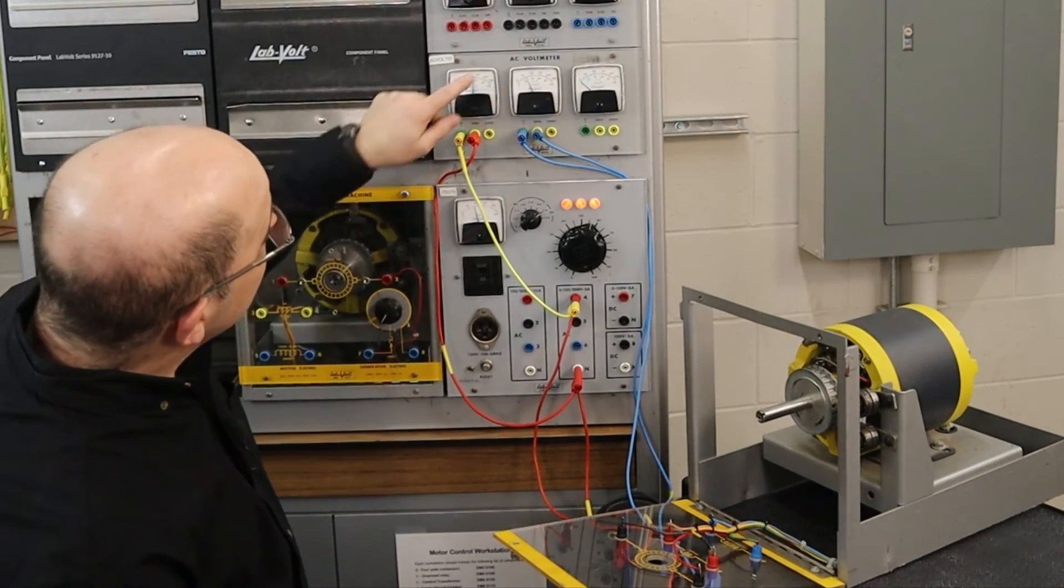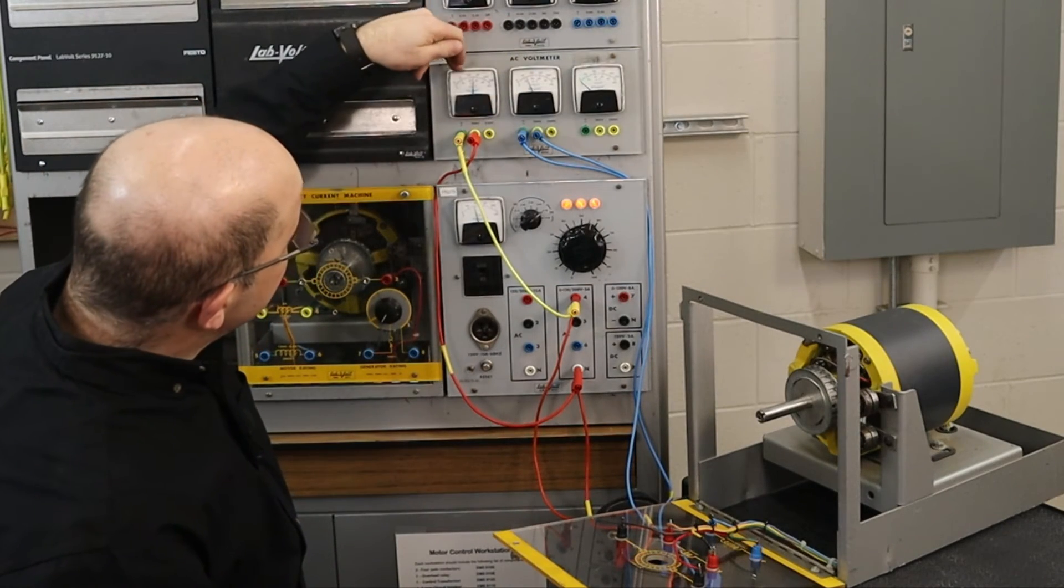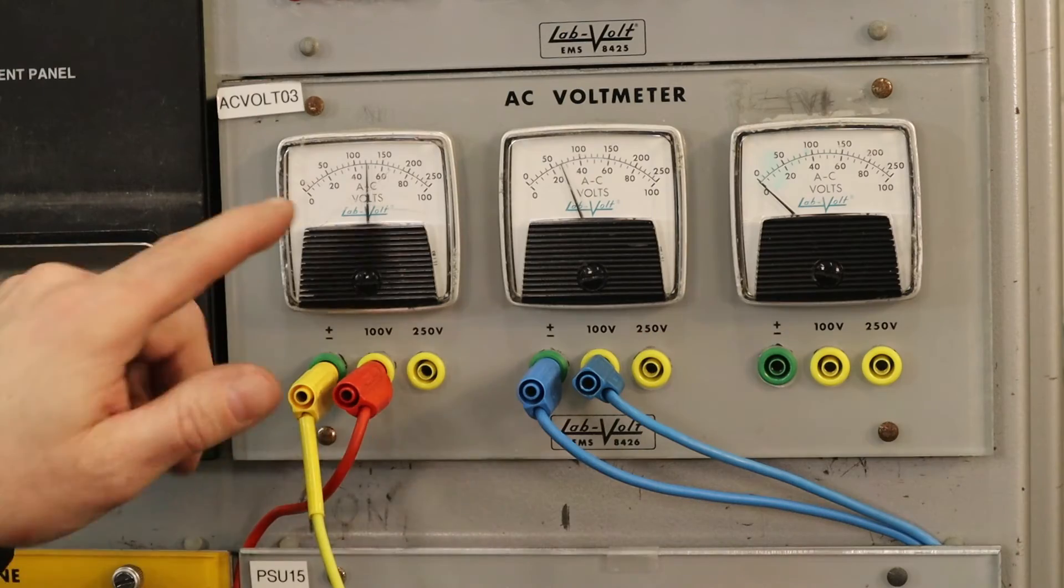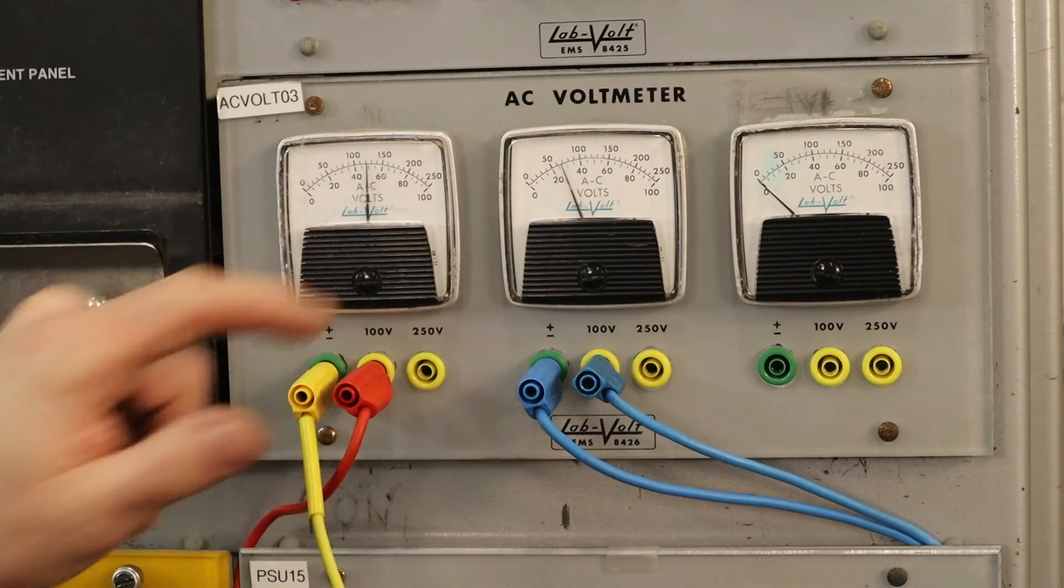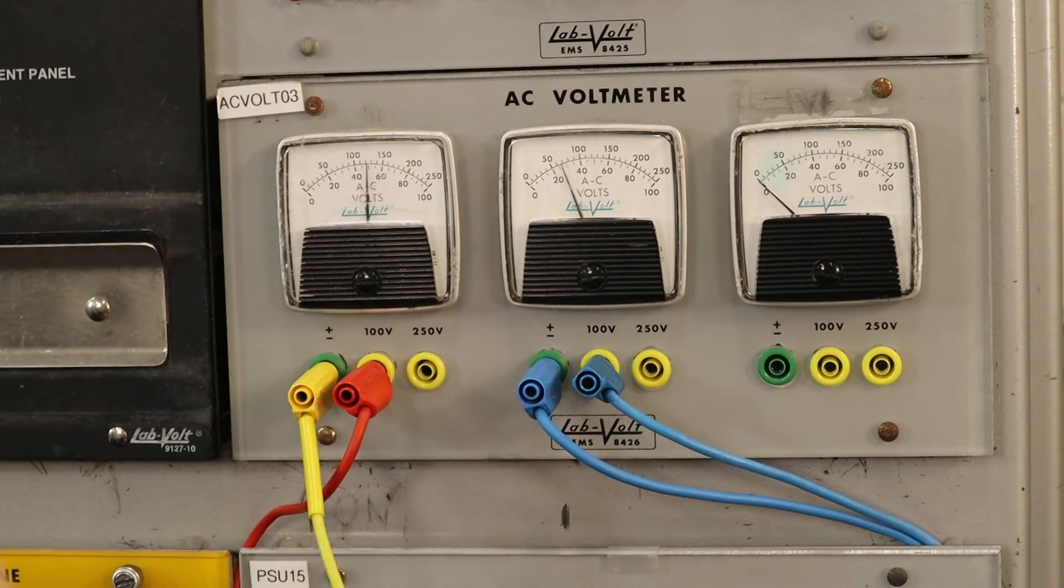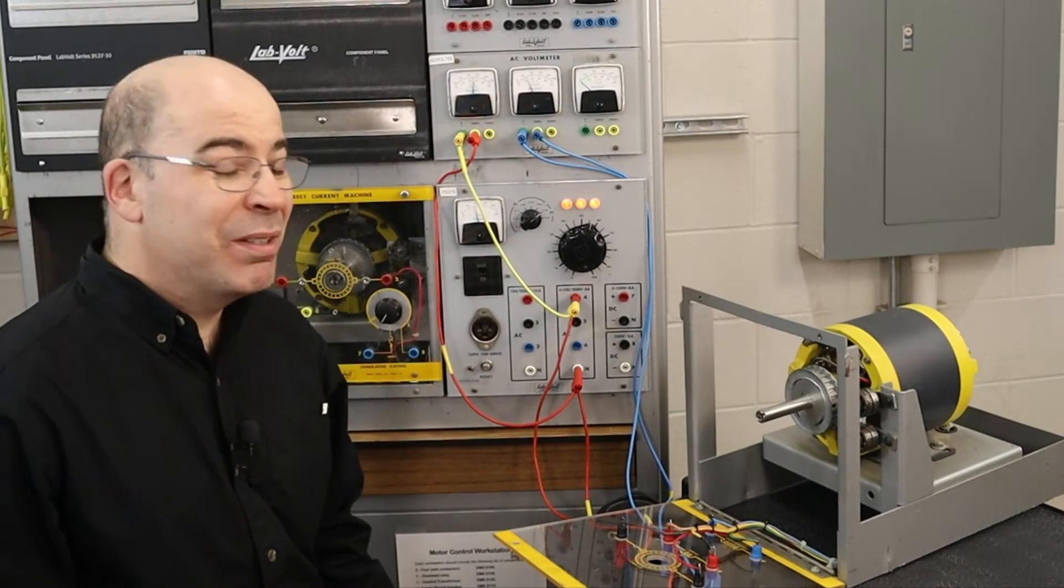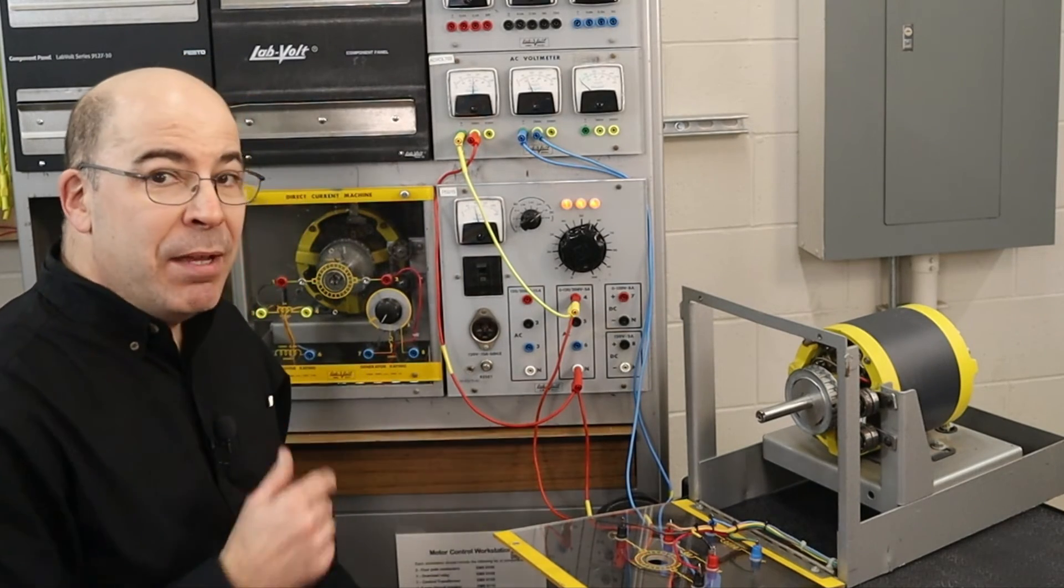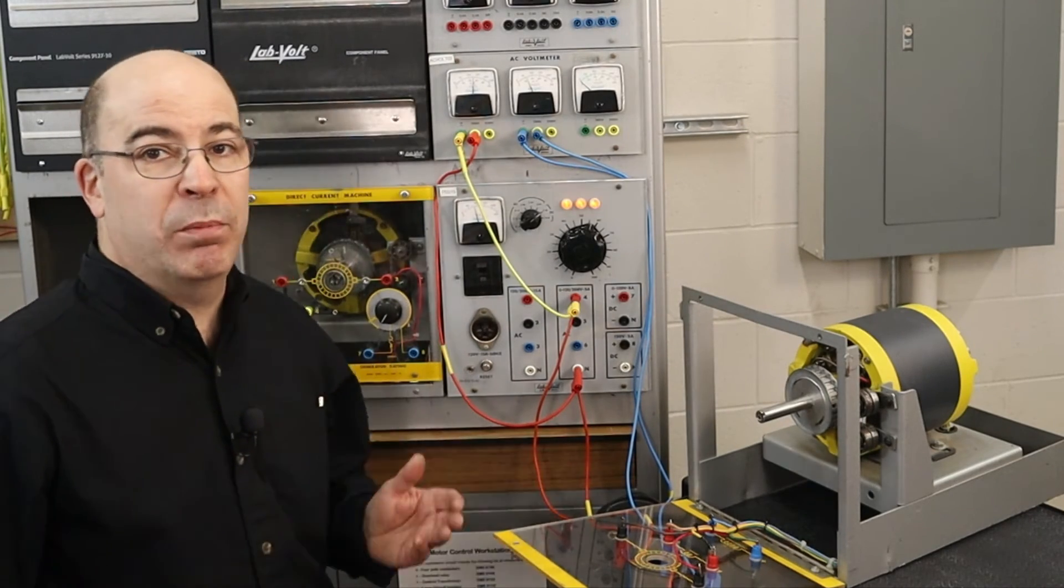Now what we can see is that this is my input, this is the series field, and I'm only reading about 25 volts, roughly half. Now that means that my brushes are not properly set.